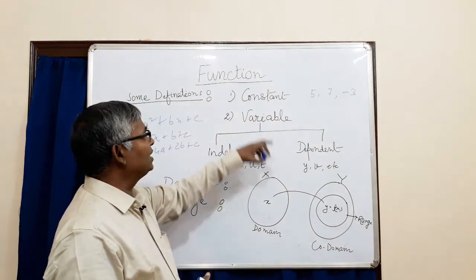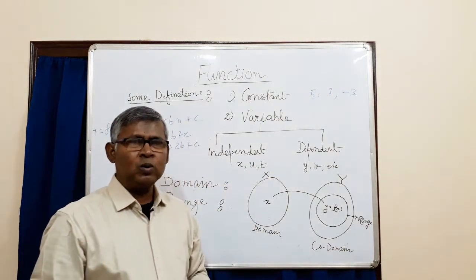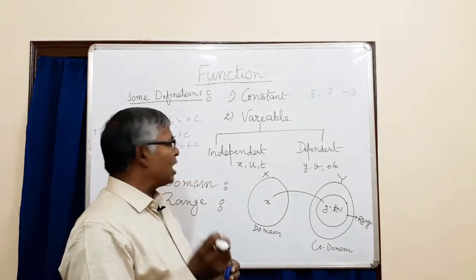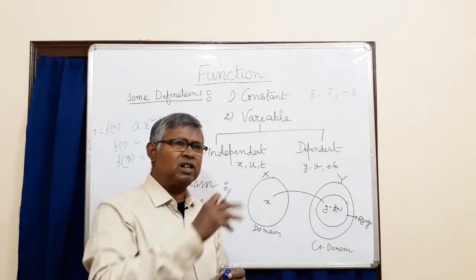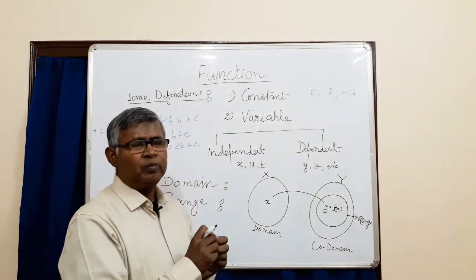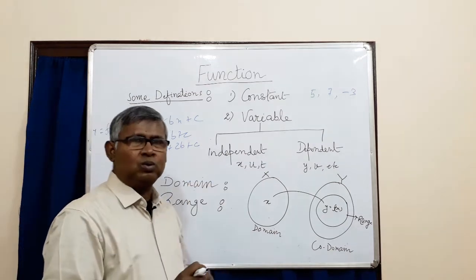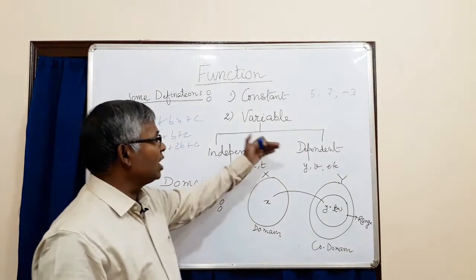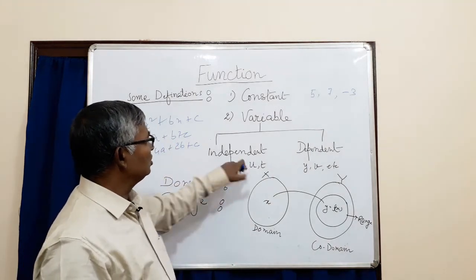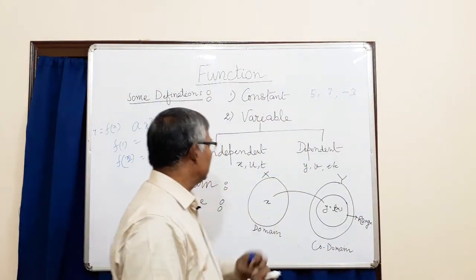A variable can be divided into two categories: one is independent variable and the other is dependent variable. An independent variable is one whose value does not relate to any other value. For example, the value of gold is like an independent variable x, while the value of an ornament depends on gold — that is a dependent variable. Independent variables are denoted as x, u, t, and dependent variables as u, v, w, etc.